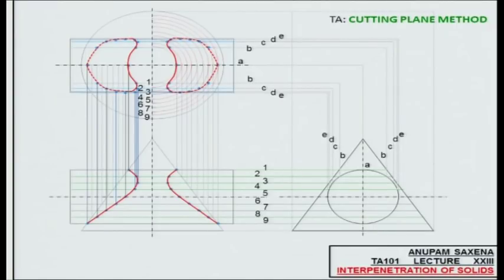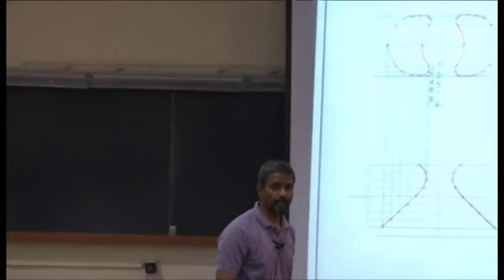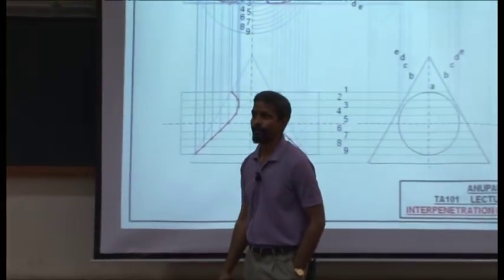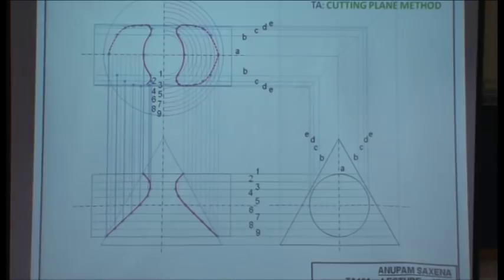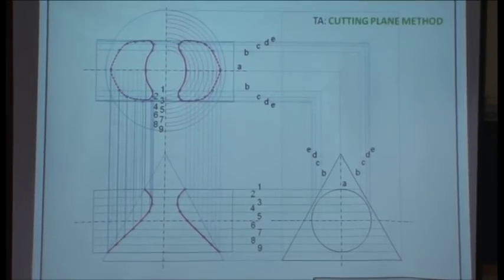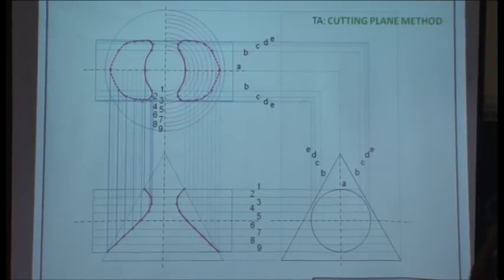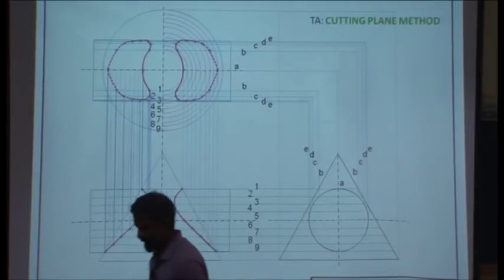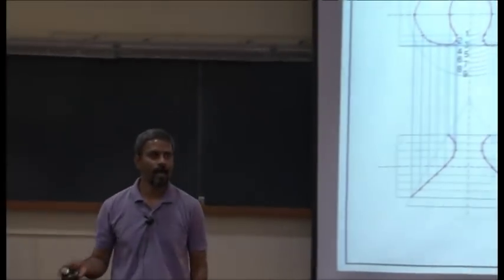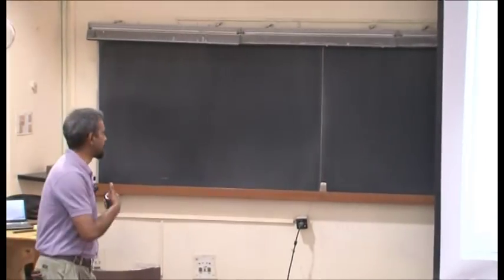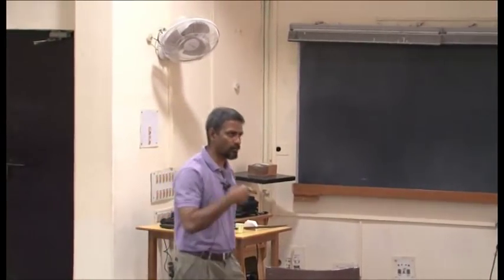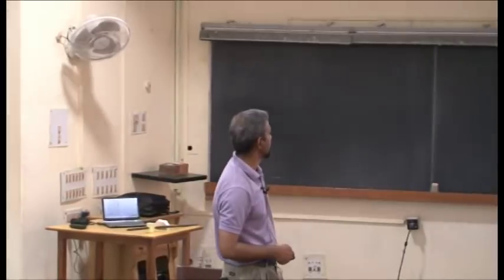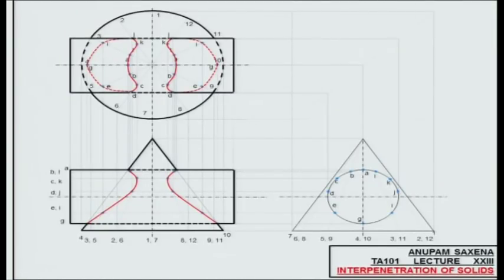Do you expect the two methods to give the same result? Yes — if you do 3D modeling on AutoCAD, take the cone and cylinder of the same size, perform a Boolean section, and compare with what we have constructed manually, they are identical.